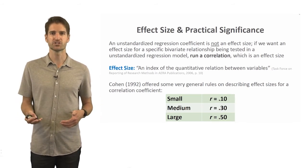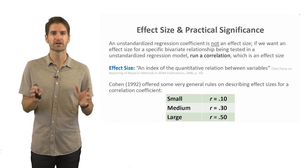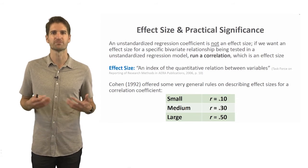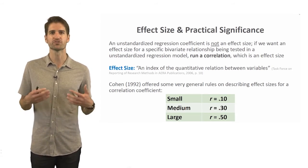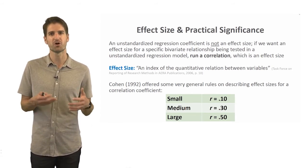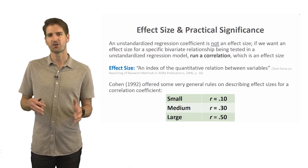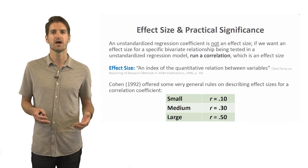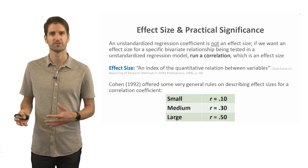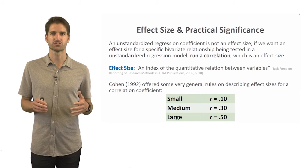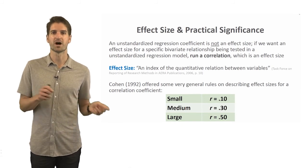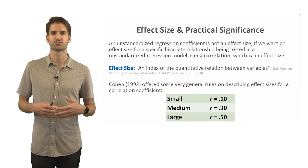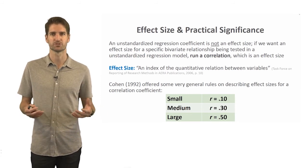Some statistical platforms will output a correlation coefficient or matrix as part of the output; others you may have to request separately. If you're interested in the practical significance or effect size of a particular regression coefficient, take the extra step of running a Pearson product moment correlation. When running a correlation, we can reflect on Cohen's rules of thumb: a small correlation is about r = 0.10, a medium is about r = 0.30, and a large is about r = 0.50.